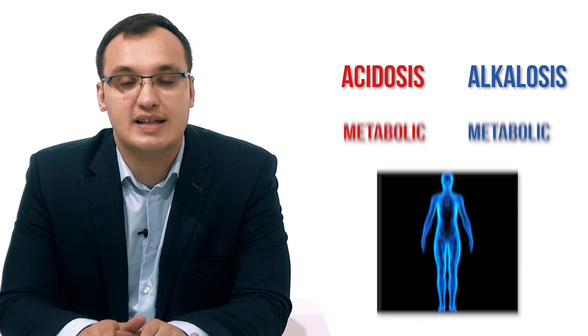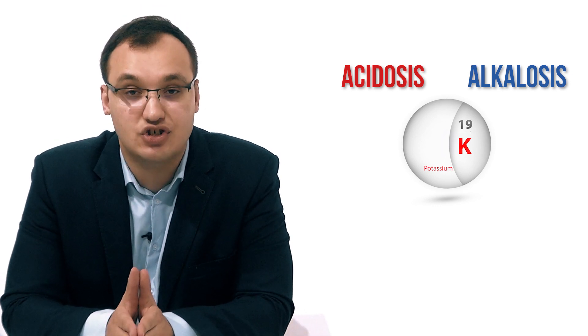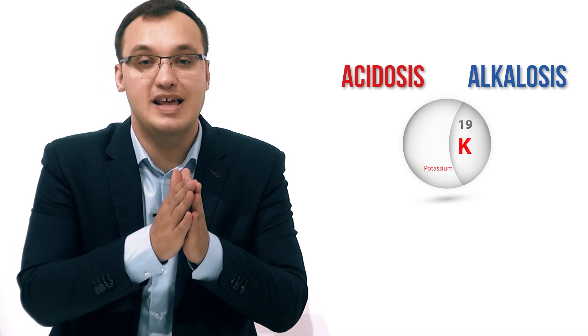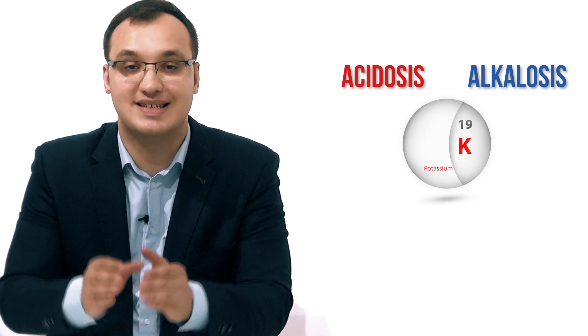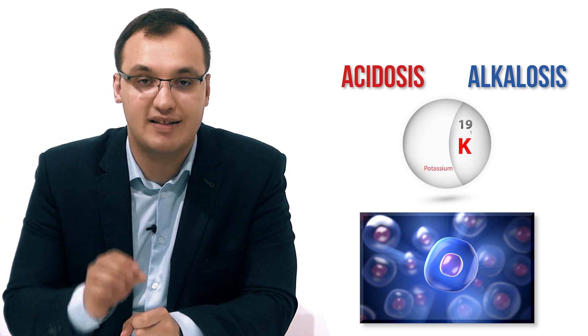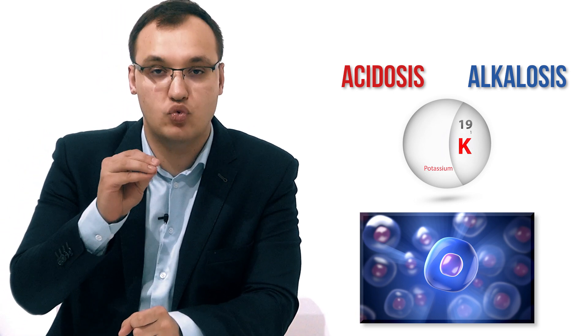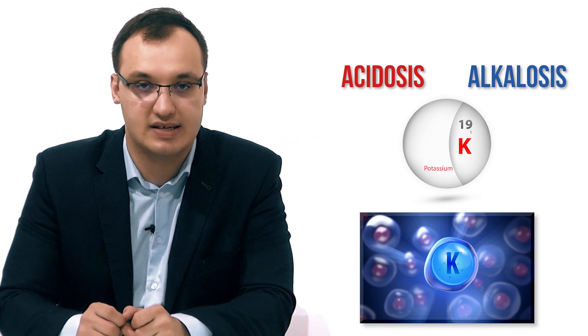If we take potassium as an example: potassium can be changed by either alkalosis or acidosis. If we consider a cell, 98% of potassium will be inside the cell, and only 2% will be outside the cell. Outside of the cell is blood, so we have a cell with blood flowing next to it.